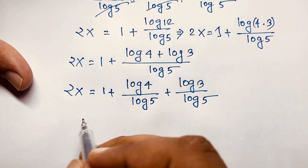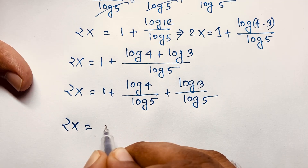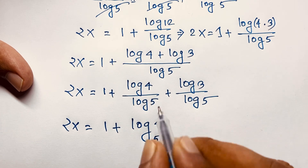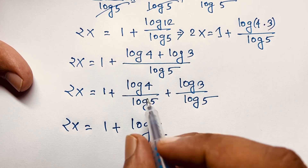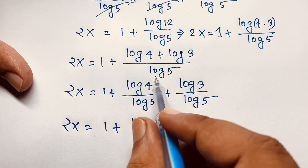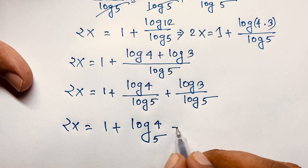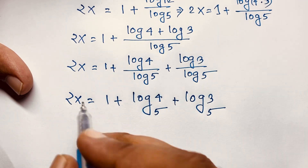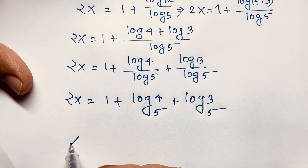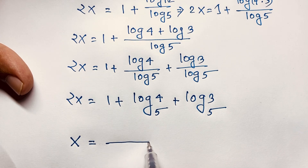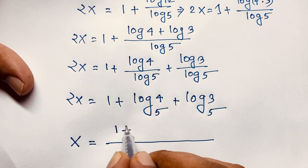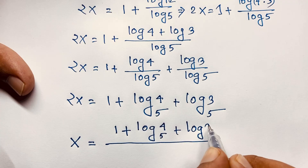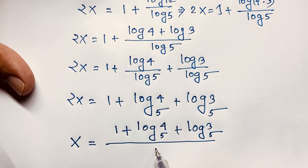Using the change-of-base formula, log 4 over log 5 is log base 5 of 4, which can also be written as log base 5 of 2 squared, and log 3 over log 5 is log base 5 of 3. Dividing both sides by 2, x equals 1 plus log base 5 of 4 plus log base 5 of 3, all over 2. This is our final answer.